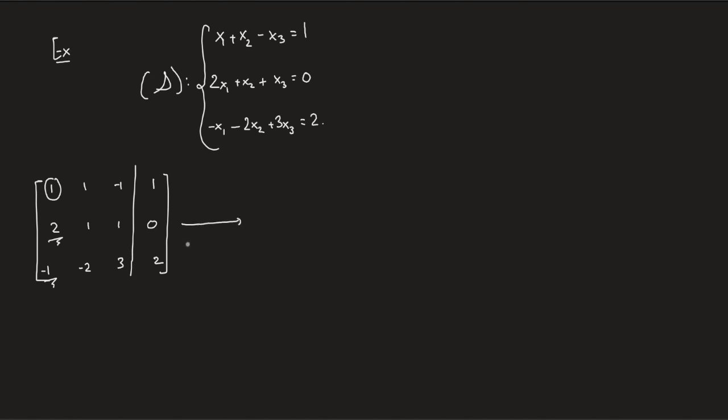So we'll start by nulling two. What do we do? Instead of R2, we're going to insert R2 minus 2R1. So that this guy is zero. What do we get? Row one and row three are the same, right? So two minus two times one is zero. One minus two times one is minus one. One minus two times minus one is three. And zero minus two times one is minus two, right?